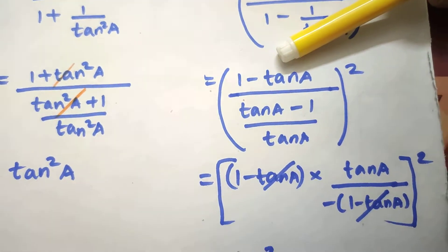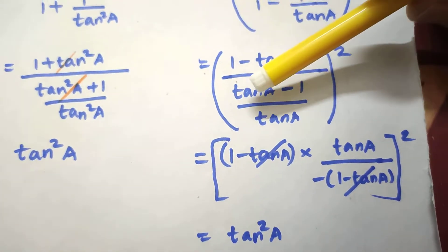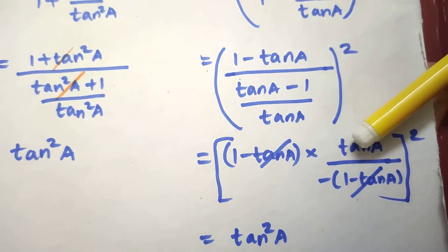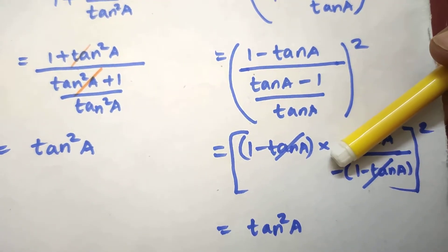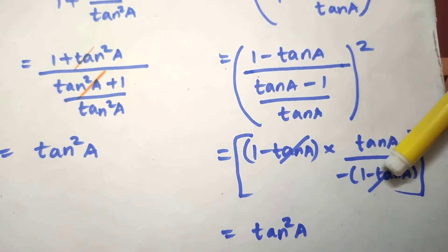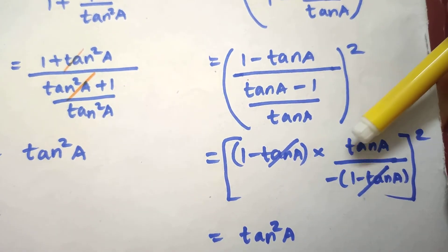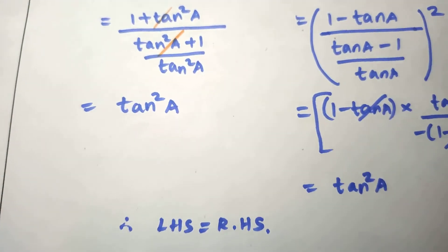So (1 - tanA) divided by (1 - 1/tanA), which equals (1 - tanA) times tanA over (tanA - 1). This simplifies to tan²A. So LHS equals RHS, hence proved.